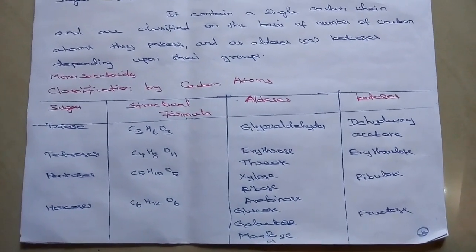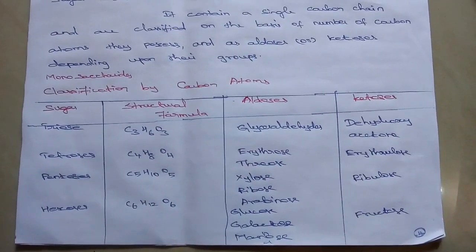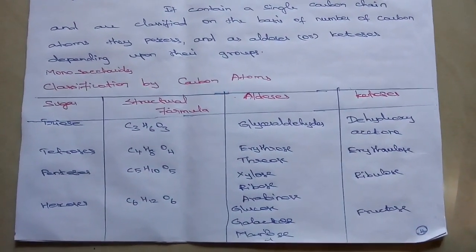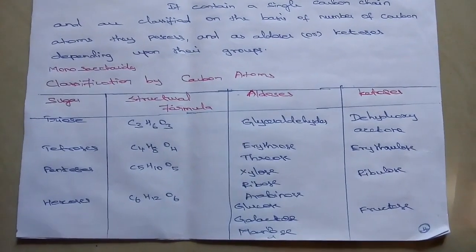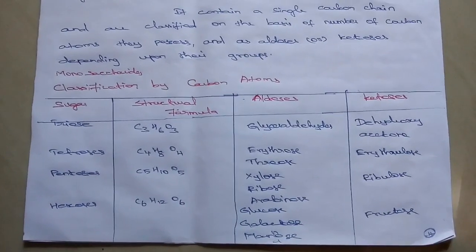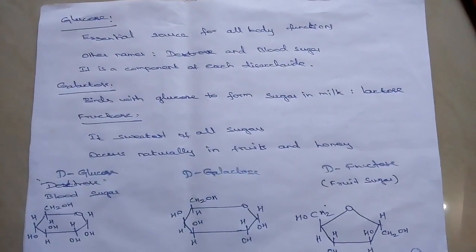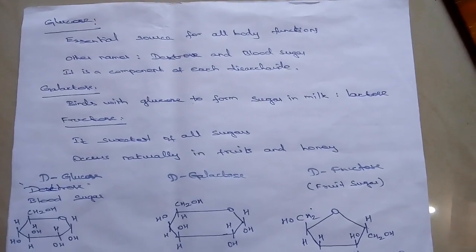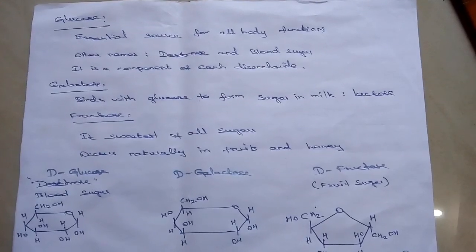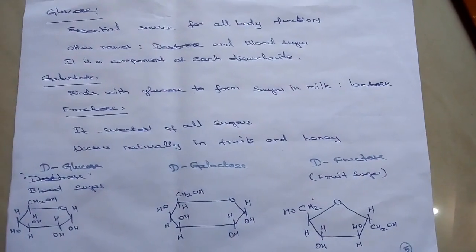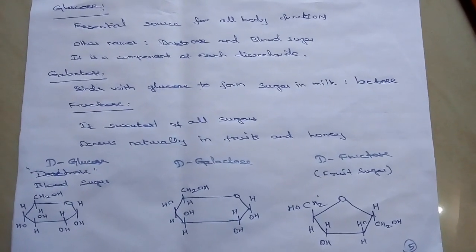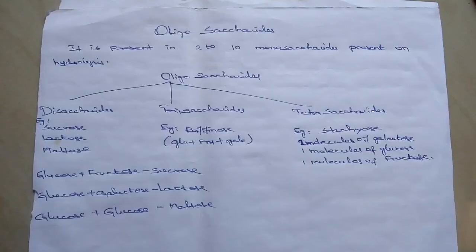Next one: Hexose. Hexose contains six carbon atoms, twelve hydrogen atoms and six oxygen atoms. Example for aldo-hexose: glucose, galactose and mannose. Ketose example is fructose. Glucose is the essential source for all body functions. Other names are dextrose and blood sugar. It is a component of each disaccharide. Galactose binds with glucose to form lactose, the sugar in milk. Fructose is the sweetest of all sugars and occurs naturally in fruits and honey.